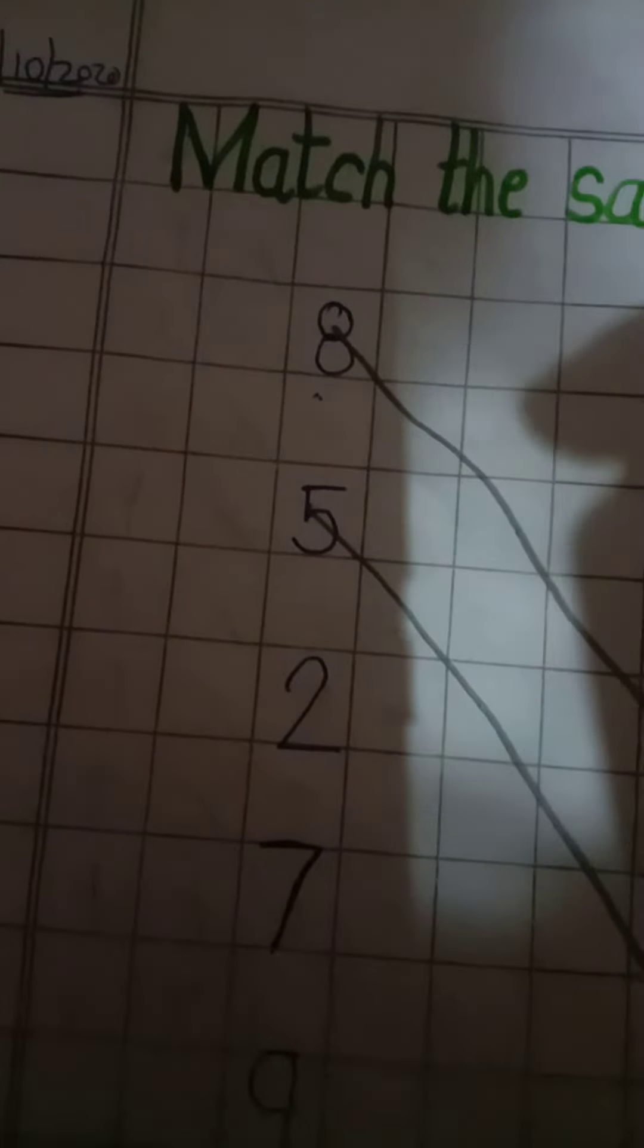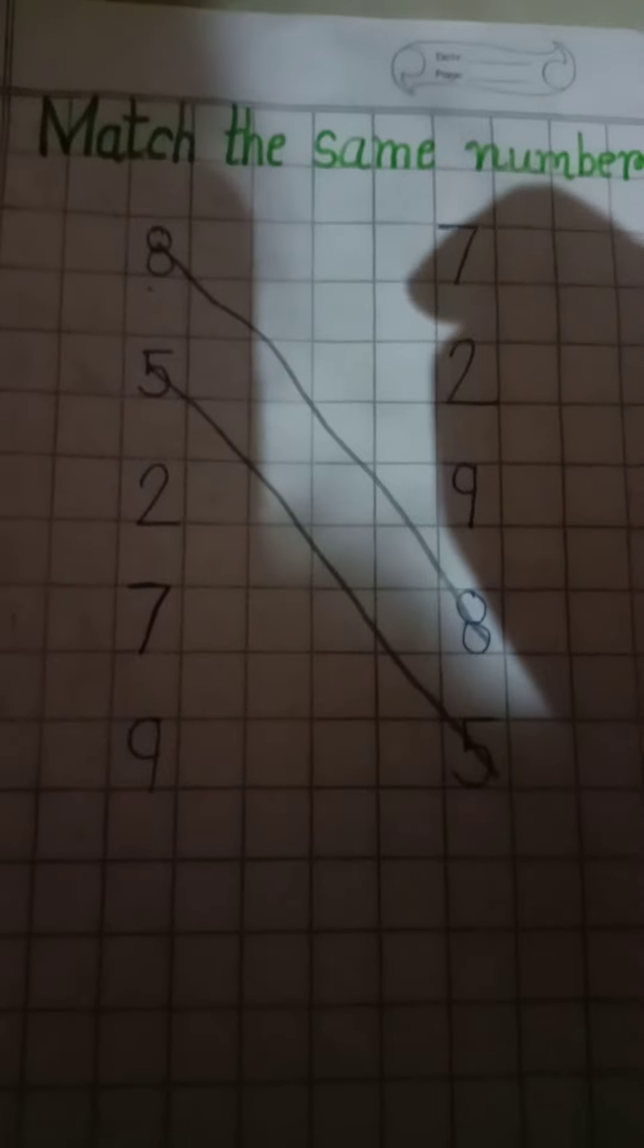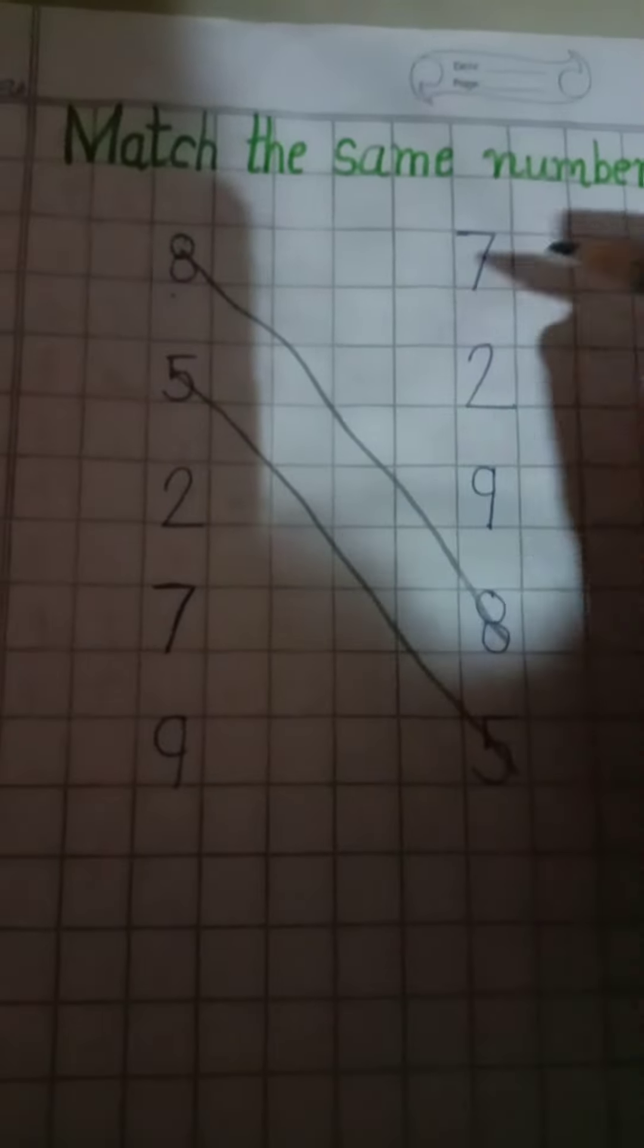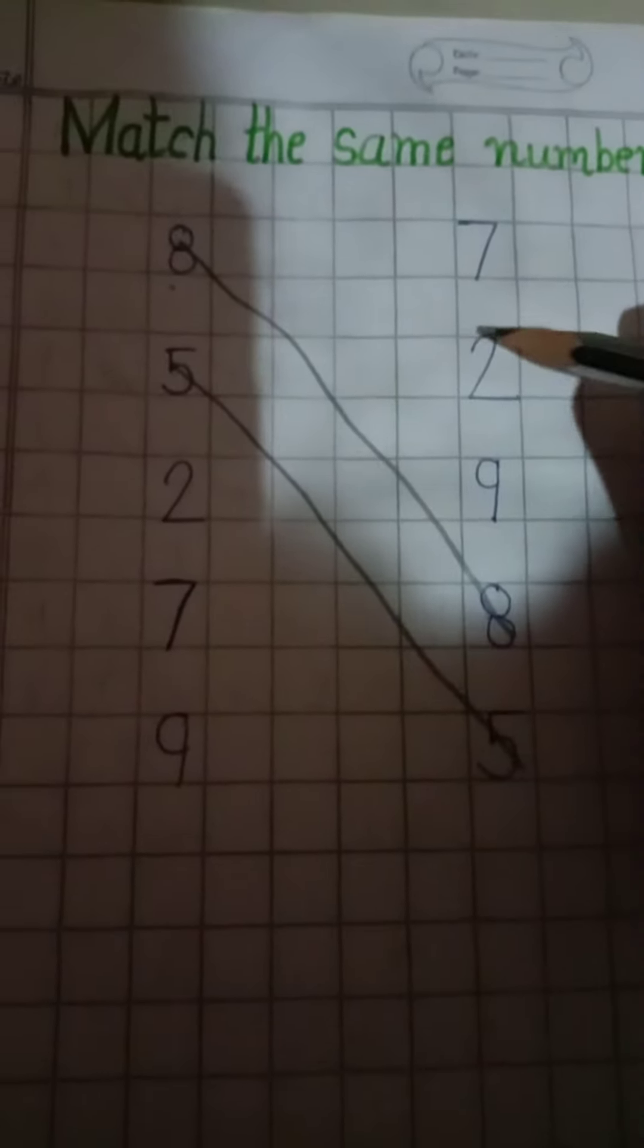Curve, standing line and sleeping line. Which number is this? Number 2. Where is the number 2? Yes, it's a number 2. So, match the 2 with 2 like this.